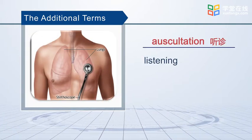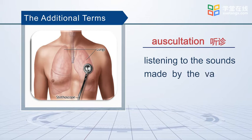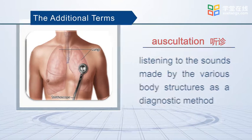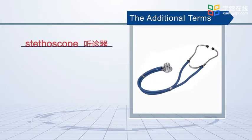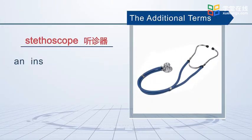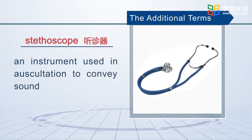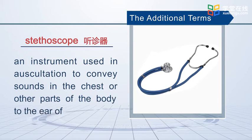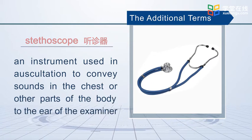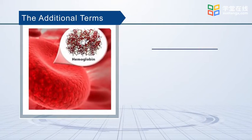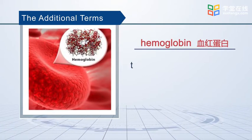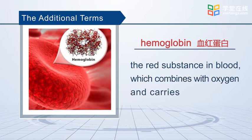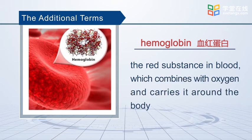Auscultation is listening to the sounds made by the various body structures as a diagnostic method. Stethoscope is an instrument to convey sounds in the chest or other parts of the body to the ear of the examiner. Hemoglobin is the red substance in the blood which combines with oxygen and carries it around the body.